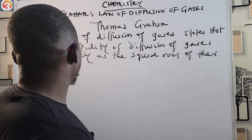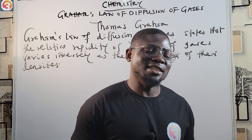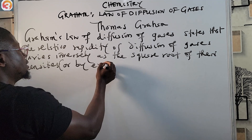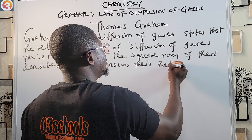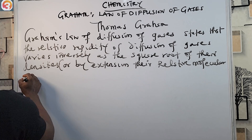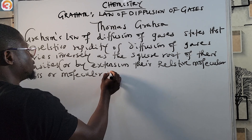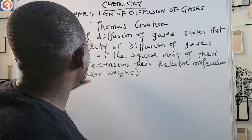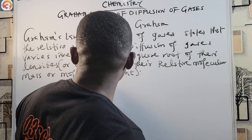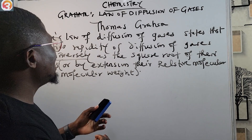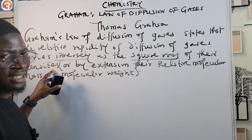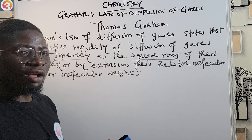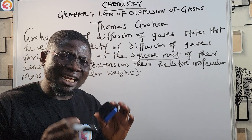Graham's Law of Diffusion states that the relative rapidity of diffusion of gases varies inversely as the square root of their density, or by extension, the square root of their relative molecular mass — also called molecular weight. These two expressions mean the same thing.